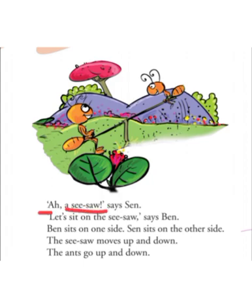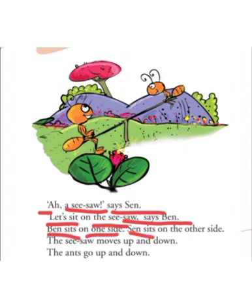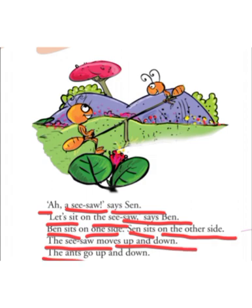Let's read once again. "A seesaw!" says Sen. "Let's sit on the seesaw," says Ben. Ben sits on one side. Sen sits on the other side. The seesaw moves up and down. The ants go up and down.